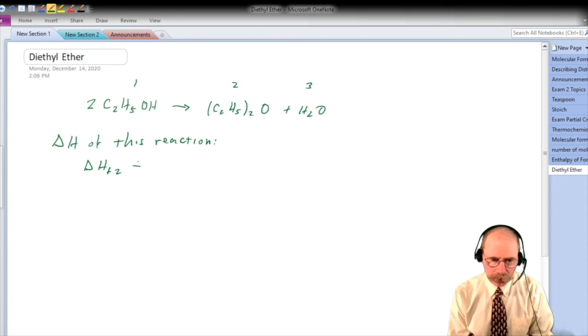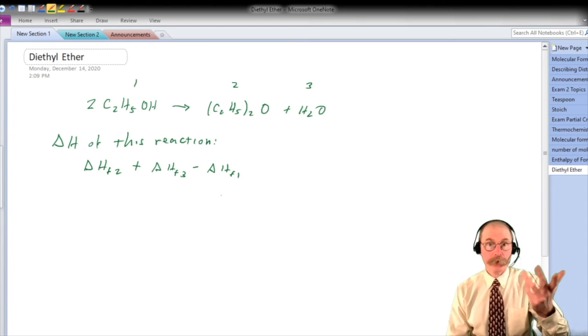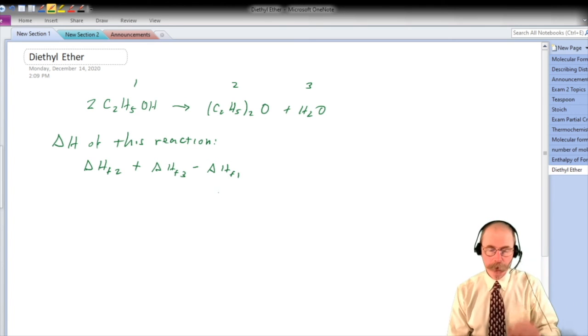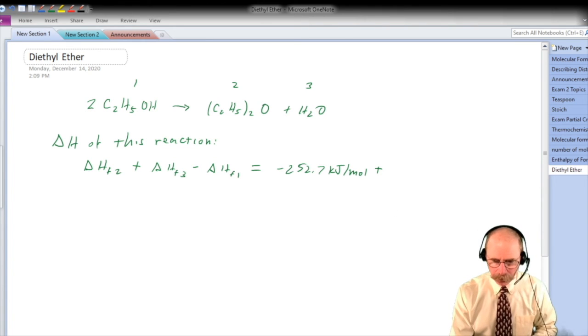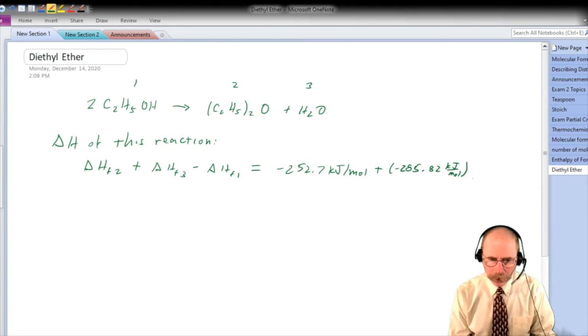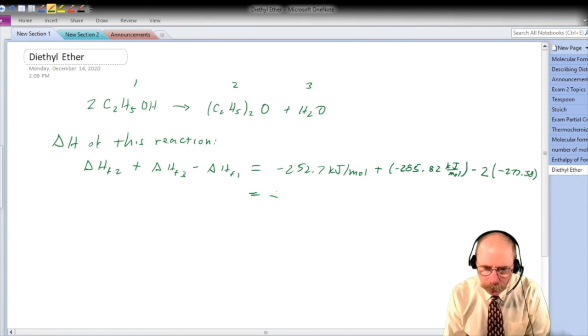The enthalpy of the reaction is just going to be the sums of the enthalpies of the products in the reaction, minus the enthalpies of the reactants. So here, we add together the enthalpies of diethyl ether and water, and subtract from it the enthalpy of 2 moles of ethanol. And when the dust settles, it's positive 16.74 kilojoules per mole, so making diethyl ether from 2 moles of ethanol is slightly endothermic.